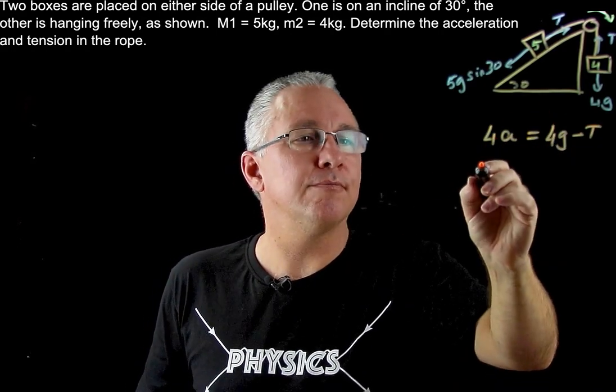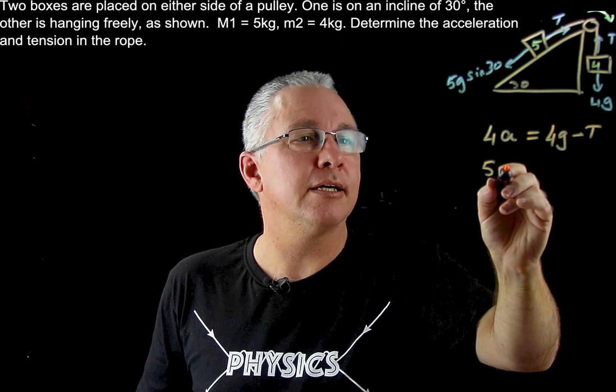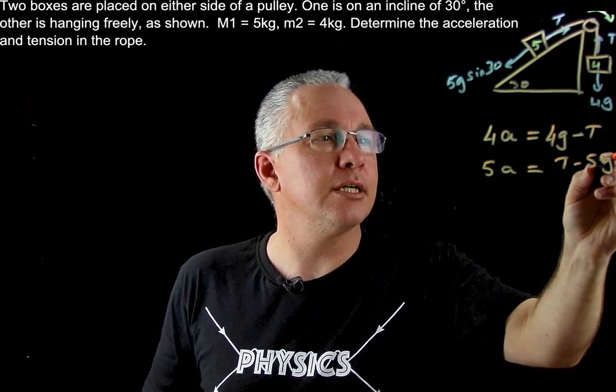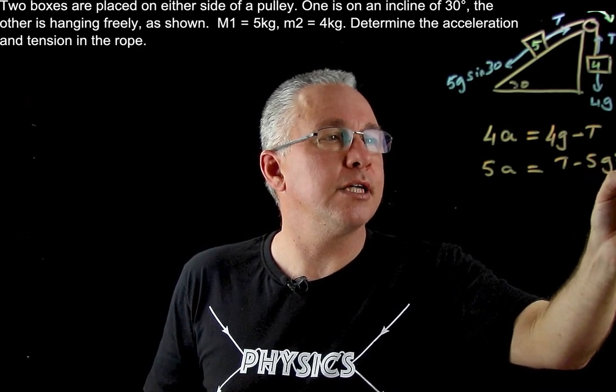Now what about my second mass? I have 5a and I have now T minus 5g sine 30.